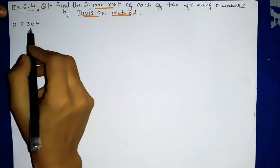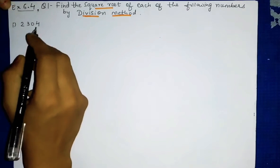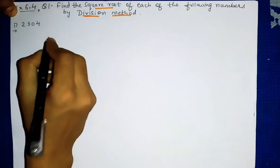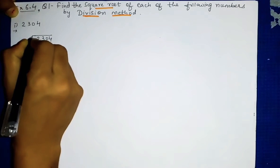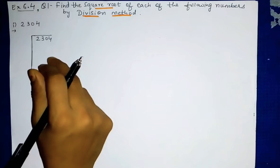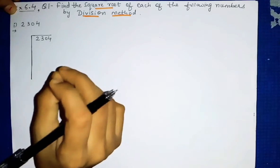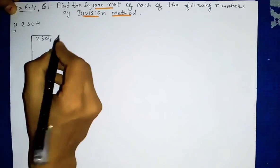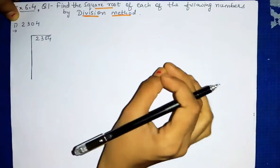The first number is 2304. We will find the square root of 2304. For finding the square root by division method, first we will write the number. The first step is to make two-two pairing. We will place bars starting from the last digit, that is, from the ones place, and make pairs of two digits.